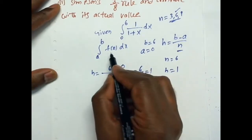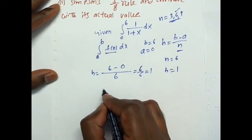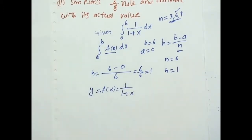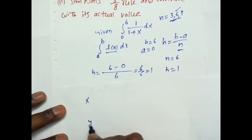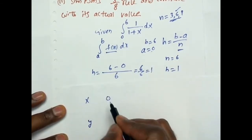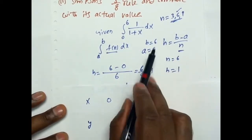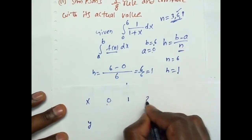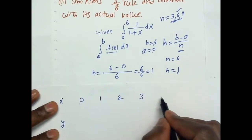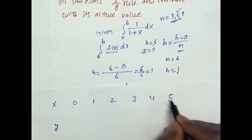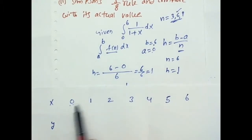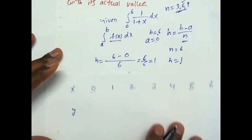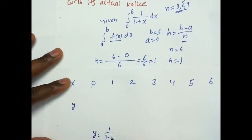Now we draw the table. f(x) = 1/(1+x), which equals y. Starting from the lower limit x = 0, and adding H = 1 each time: x = 0, 1, 2, 3, 4, 5, 6, up to the upper limit. Now compute the y values using y = 1/(1+x).